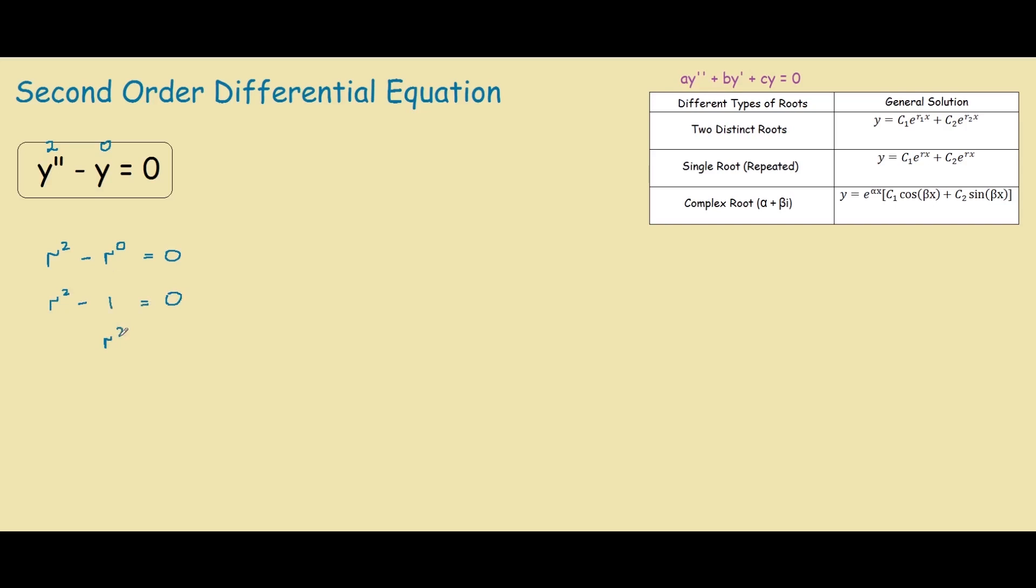And if you rearrange this, you have r squared equals 1. And if you solve this equation, you have r equals plus minus square root of 1, which is just plus minus 1.